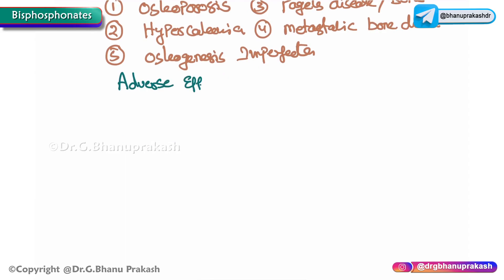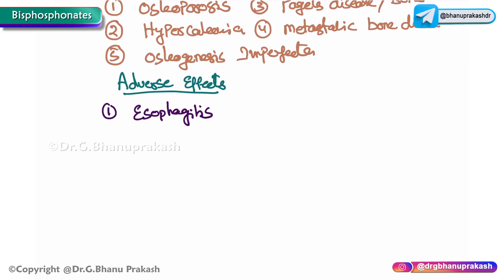Let us discuss the adverse effects of bisphosphonates. One important adverse effect is esophagitis, particularly seen with oral bisphosphonates and most often with alendronate. This can be prevented by taking alendronate with plenty of water and staying upright for at least 30 minutes after taking the medication.